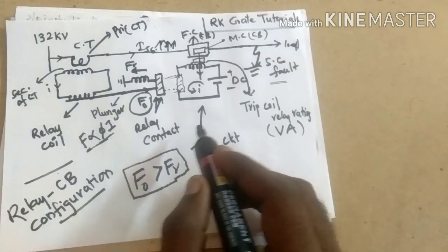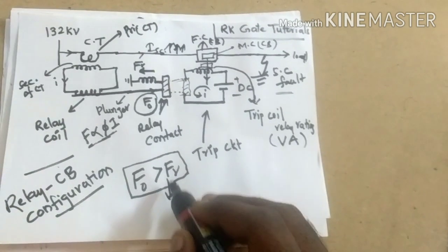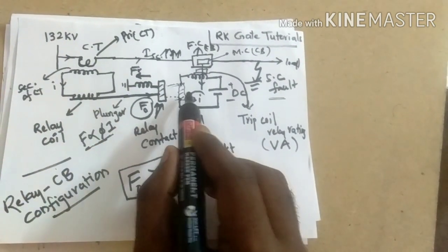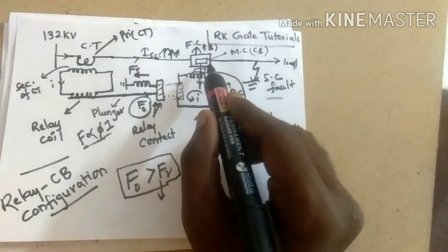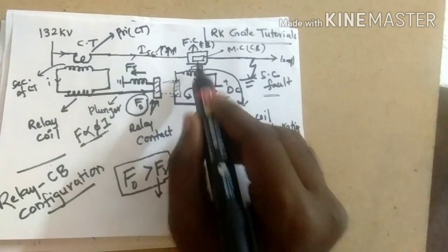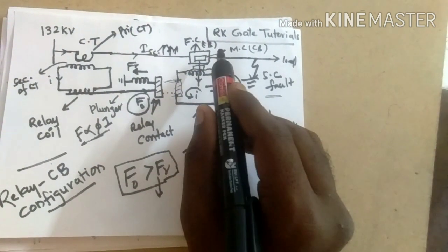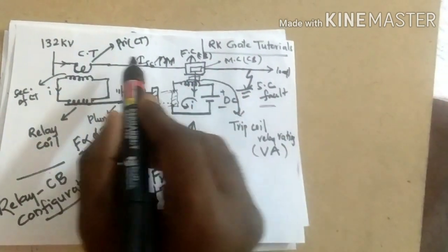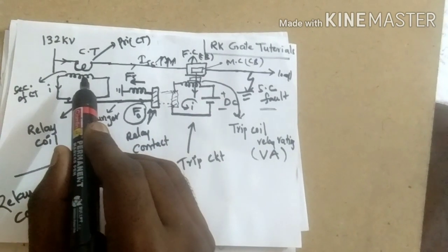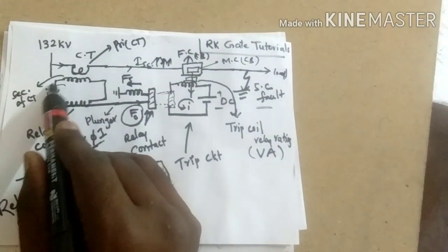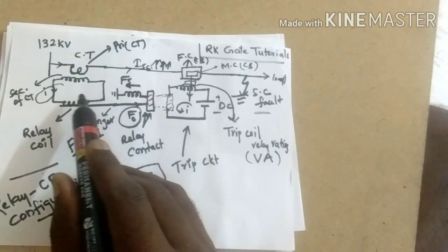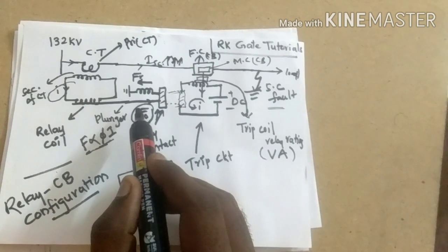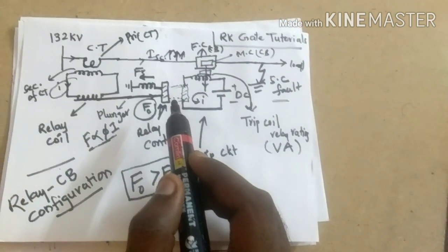This is the relay and circuit breaker configuration. The condition to operate the relay is: operating force greater than the restraining force. When the operating force exceeds the restraining force, the plunger moves — the relay contacts close the trip circuit — current flows in the trip coil, the trip coil pulls down the moving contact of the circuit breaker, which opens the line. This operating force is generated by the short circuit current, which causes excess current in the CT secondary, producing more flux, which generates the operating force that moves the relay contact forward.